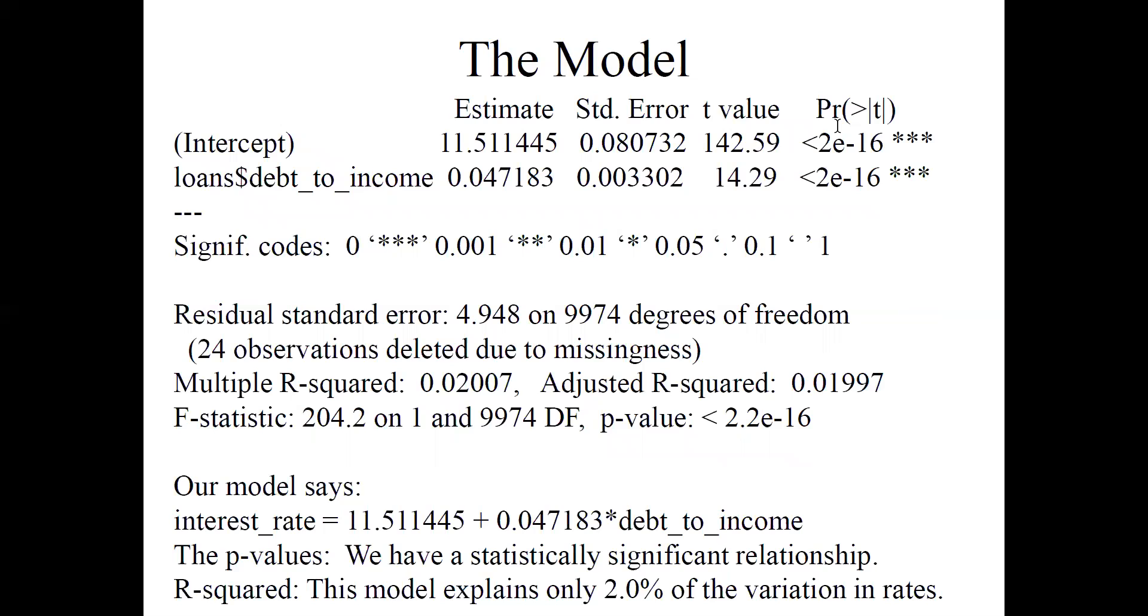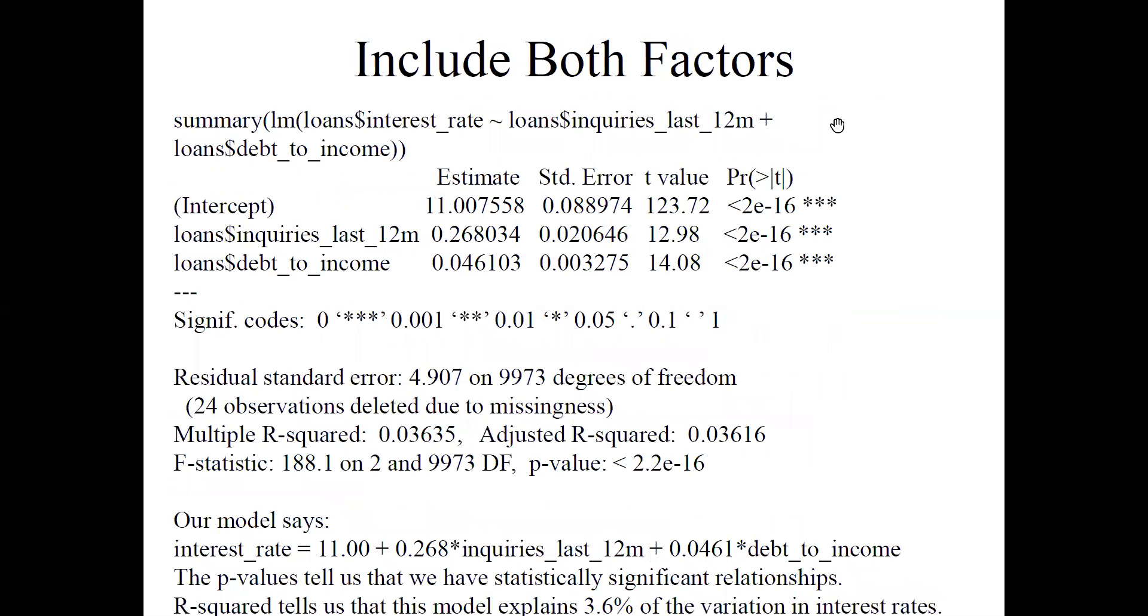So these were both individual single-factor linear regressions. Now, what we want to do is include both of them, do them all at once. Notice this command: we do summary(lm(loans$interest_rate ~ loans$inquiries_last_12m + loans$debt_to_income)). We want both of these two input variables to come in together, so we can fit them together into one equation at the same time.